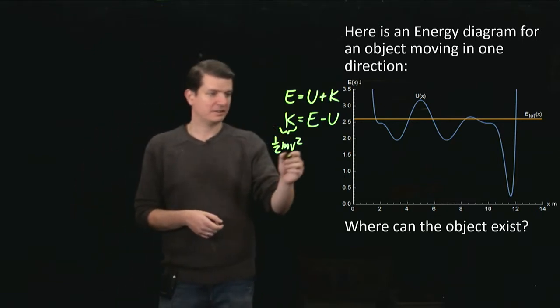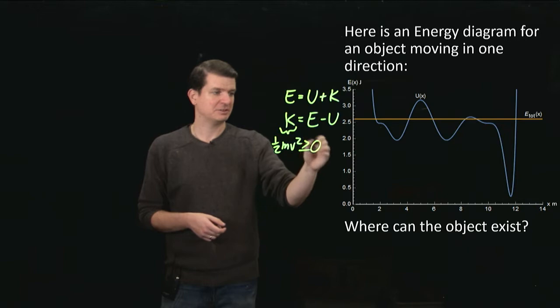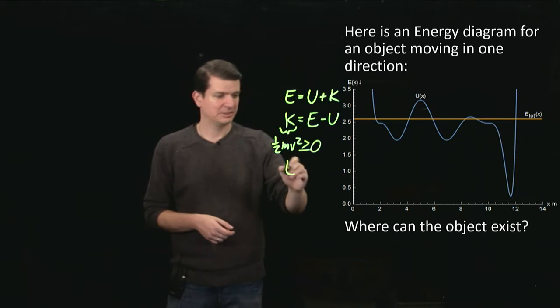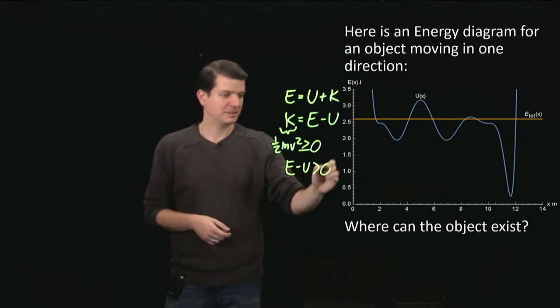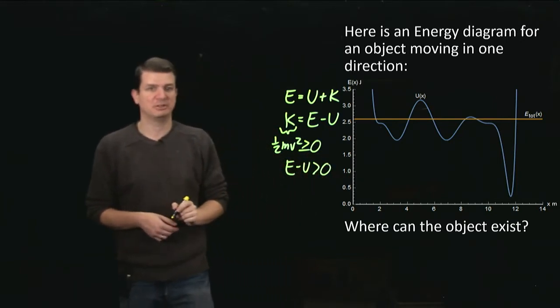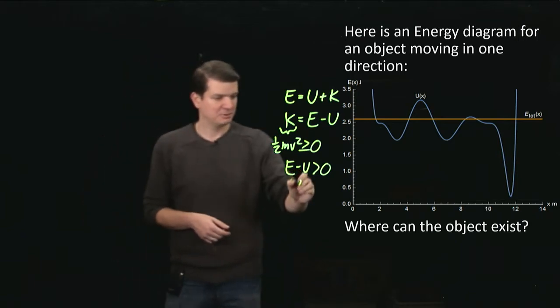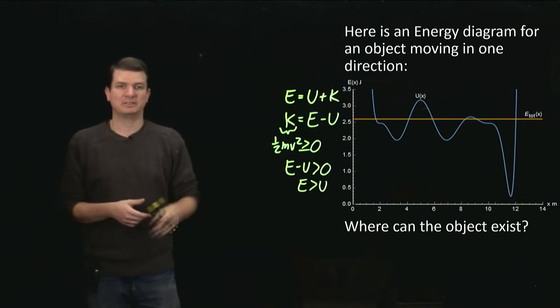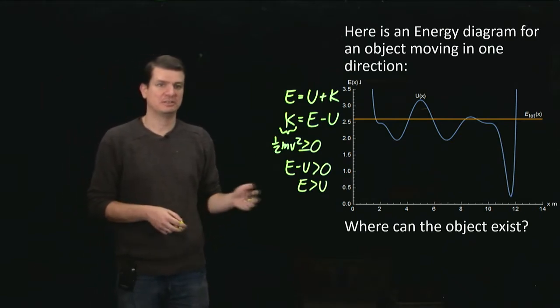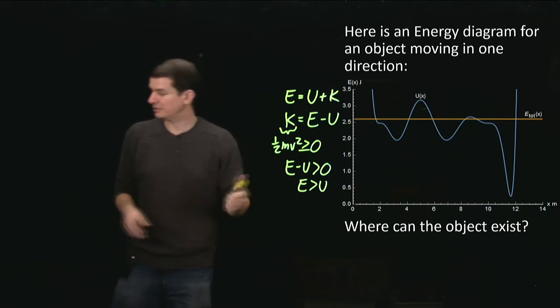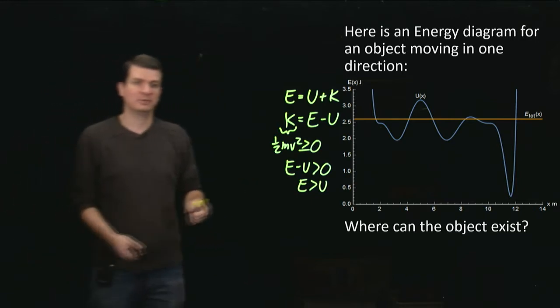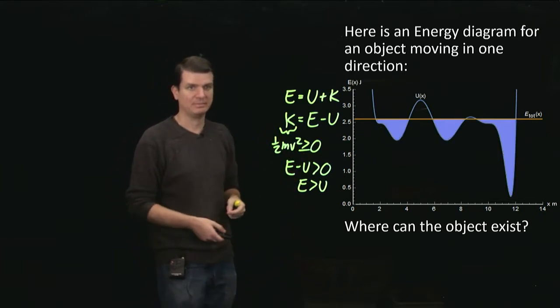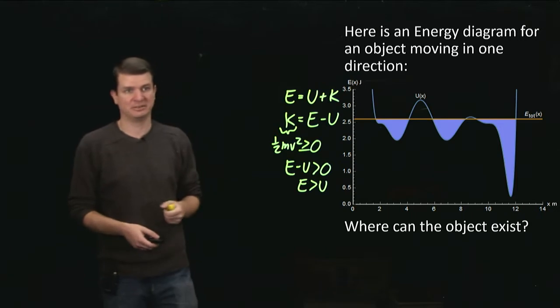So if the kinetic energy is always greater than or equal to zero, and kinetic energy is equal to total energy minus potential, then we know that E minus U is greater than zero, in order for this to be a realistic situation, which in turn means that E is greater than U. And so now we have a nice criterion by which we can decide where these objects can exist. They can only exist anywhere where indeed the potential energy is less than the total energy. So that's those shaded regions on this plot.